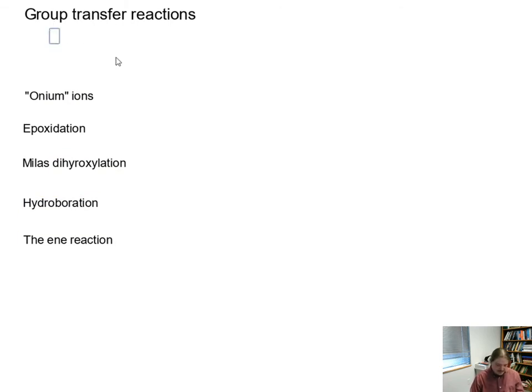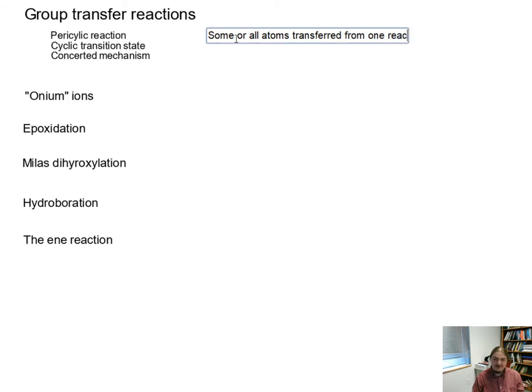All right so this is a pericyclic reaction, all right so it has all of the features of the pericyclic reaction, so that is cyclic transition state and a concerted mechanism. But what is different about a group transfer reaction is that we have some or all atoms transferred from one reactant to another.